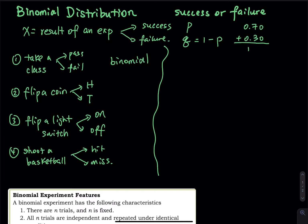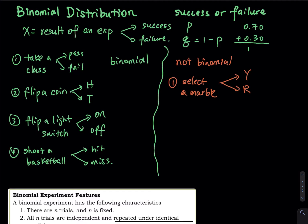Those are all binomial — the result is either a success or a failure. What about non-binomial? Let's say you have a big box with many colored marbles: yellow, red, and green. The result could be yellow, red, or green marble. Is this binomial? No, because there are more than two results. Binomial allows only two results. However, if you rephrase it as 'either yellow or non-yellow,' then it becomes binomial.